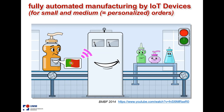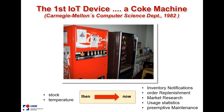What most people don't know is the first Internet of Things device was a Coke machine in a computer department, where the students sitting in offices far away from the single vending machine — each time they went down there, the Coke machine was empty, or the Coke was too warm. And if you know the Americans, they don't like warm Coke.